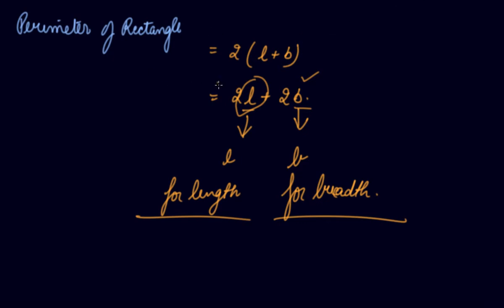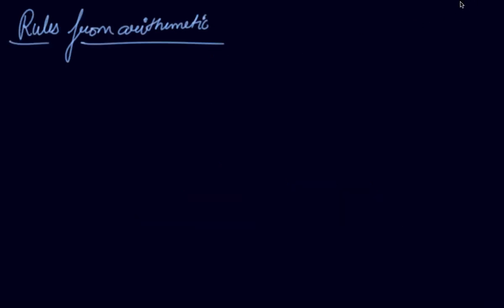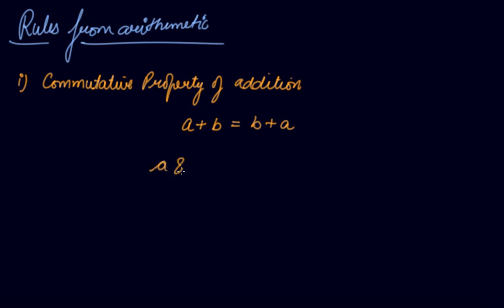Again, we are representing this in the form of variable, so L and B are variables here. Now, rules from arithmetic. We have studied in whole numbers the property that is commutative property of addition, which says A plus B is equal to B plus A. A and B again here are variables. A can be any whole number, B can be any whole number.